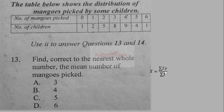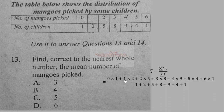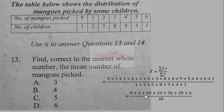The mean is given by Σfx / Σf. We multiply each number of mangoes by the corresponding frequency and sum them: 0 + 2 + 10 + 24 + 36 + 20 + 6, all over 30. That simplifies to approximately 3.27, which to the nearest whole number is 3.